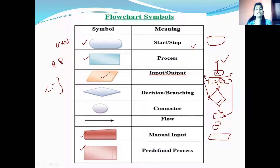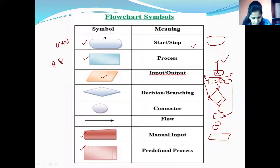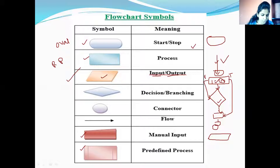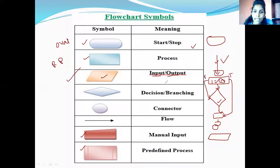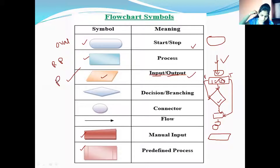The third symbol is the parallelogram — it is like a slanted rectangular shape. This symbol is called a parallelogram, which is used to accept input and produce output. It is used to indicate the input and output of operations. For example, if the result needs to be displayed or printed, it is shown using this parallelogram symbol.